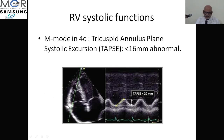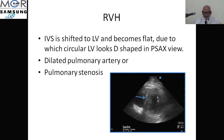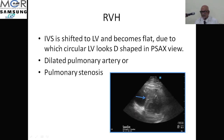TAPSE — Tricuspid Annular Plane Systolic Excursion — measures how much the tricuspid annular plane moves towards the apex during systole when the right ventricle contracts. This apical movement should be sufficient to call RV systolic function normal. In this patient the TAPSE is 20 mm, which is more than 16 mm and therefore normal. If it is less than 16 mm, the movement is reduced, indicating decreased right ventricular systolic function. A drop in TAPSE suggests decreased right ventricular systolic function.